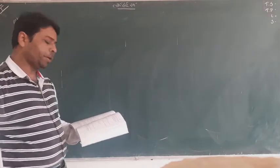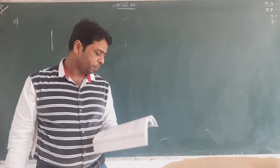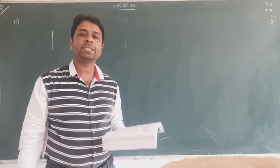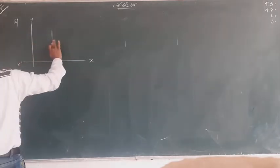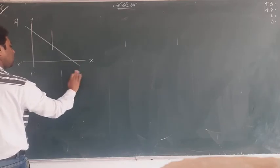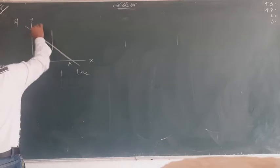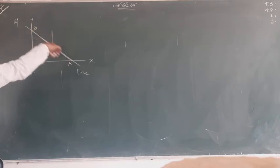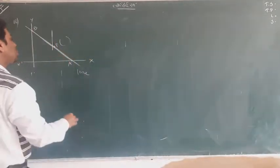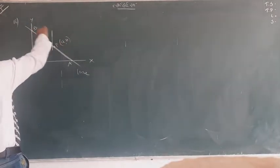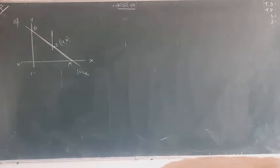Question 18 says: P(a,b) is a midpoint of the line segment between the axes. Show that the equation of the line is x/a + y/b = 2. This is a very good question. Let me explain — these are the two axes, and the segment between them is this portion. This is called the segment between the axes, and P(a,b) is its midpoint.